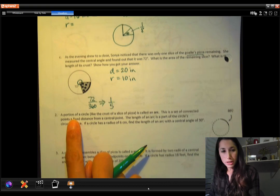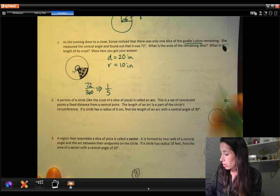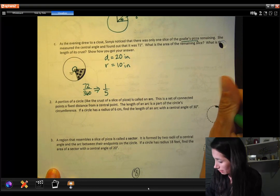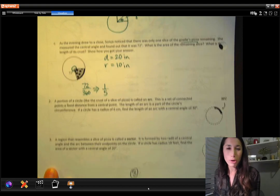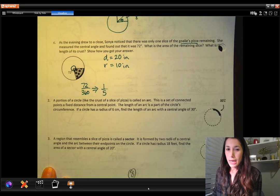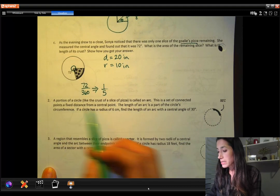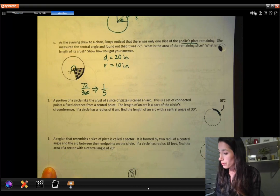So now what we're talking about here, a portion of a circle, like the crust of the pizza, is called an arc. So that's this piece here. That's the arc length. So that's like part of the circumference. It's called the perimeter of a circle or circumference. This is a set of connected points, a fixed distance from the center point. So we have our center point here. The length of an arc is part of the circle circumference.